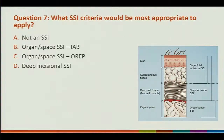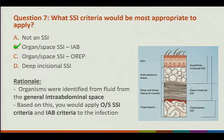Question 7: what criteria would be most appropriate to apply? We have organisms identified from the organ space level, and you would look at IAB because it's from the general intra-abdominal space. For those who identified which IAB criteria was met, it is 3A — because you have that organism identified from non-purulent fluid and at least two of the qualifying symptoms.